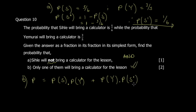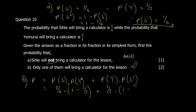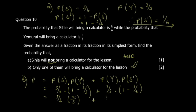So P(only one brings calculator) = P(Cifler brings) × P(Mrai does not) + P(Mrai brings) × P(Cifler does not). That is: (5/6) × (1 − 3/5) + (3/5) × (1 − 5/6) = (5/6) × (2/5) + (3/5) × (1/6).